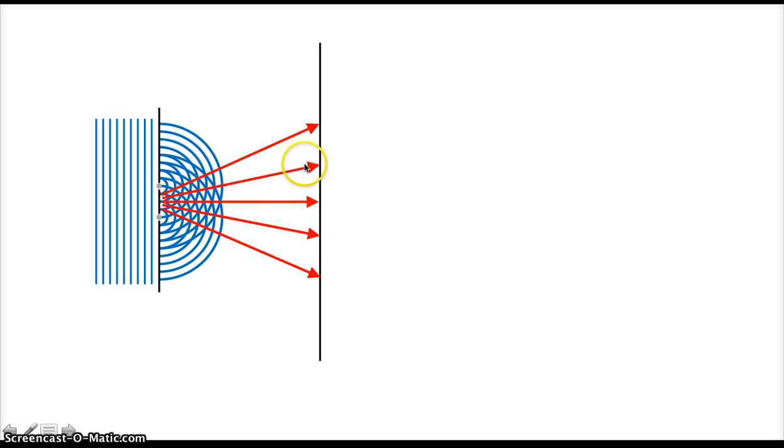there's between every two rays, between these two rays of constructive interference, right in between, there's a ray of destructive interference. And between these two constructive interference rays, there will be destructive interference right between. And here's another ray of destructive, and another ray of destructive interference.